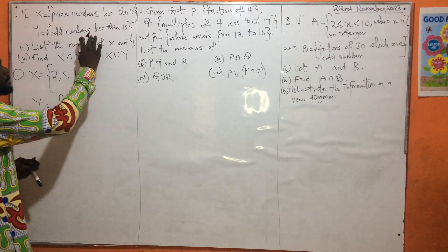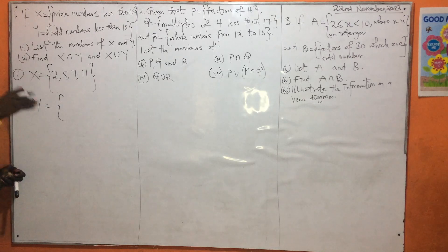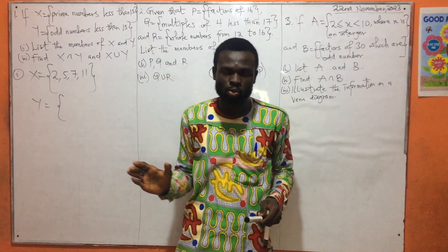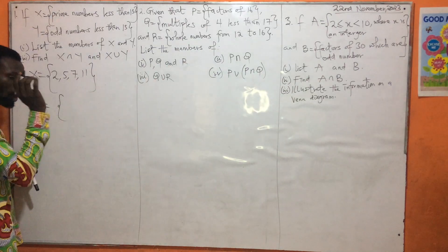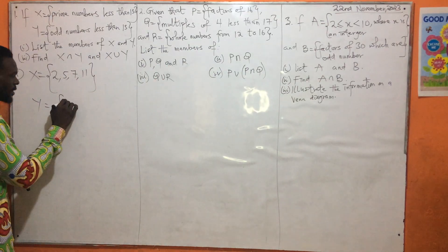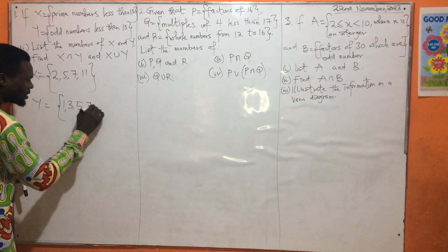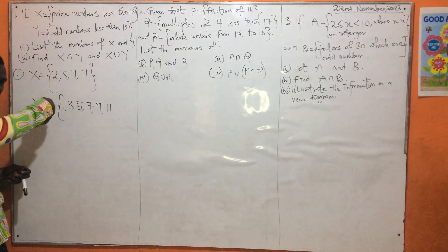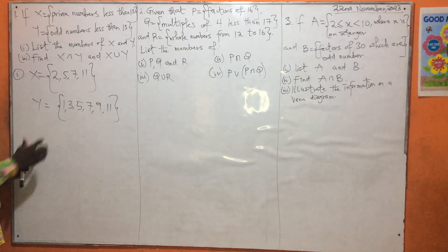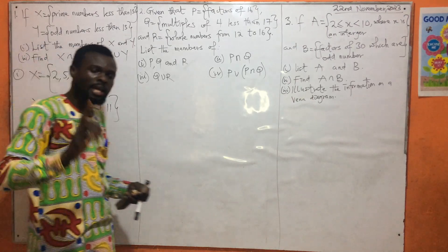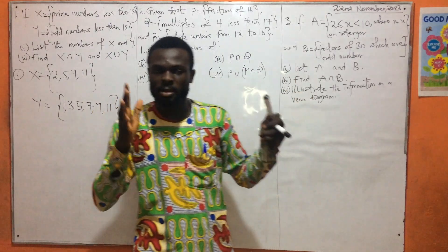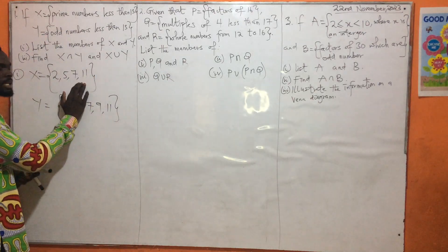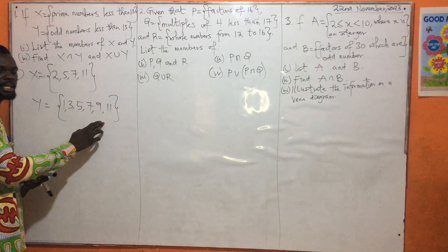Y is odd numbers less than 13. Odd numbers are numbers that are not divisible by 2. So let's list odd numbers: we have 1, 3, 5, 7, 9, 11, and 13. But since it is less than 13, we are not going to include 13. Also note that 1 is not a prime number because the only factor of 1 is 1 itself, and for a number to be prime it should have exactly 2 factors. So this gives us the prime numbers less than 13, and this gives us the odd numbers less than 13.